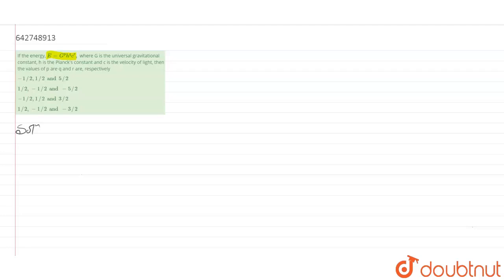So, if we write it in dimensional formula, we will get m power 1, l power 2 and t power minus 2 for E, which will be equal to m power 1.